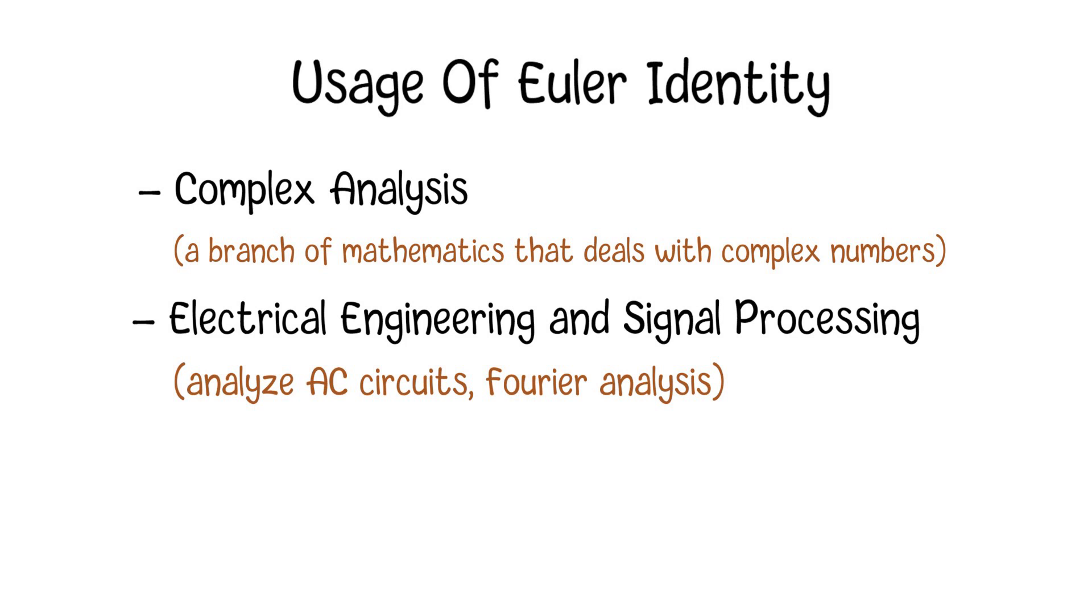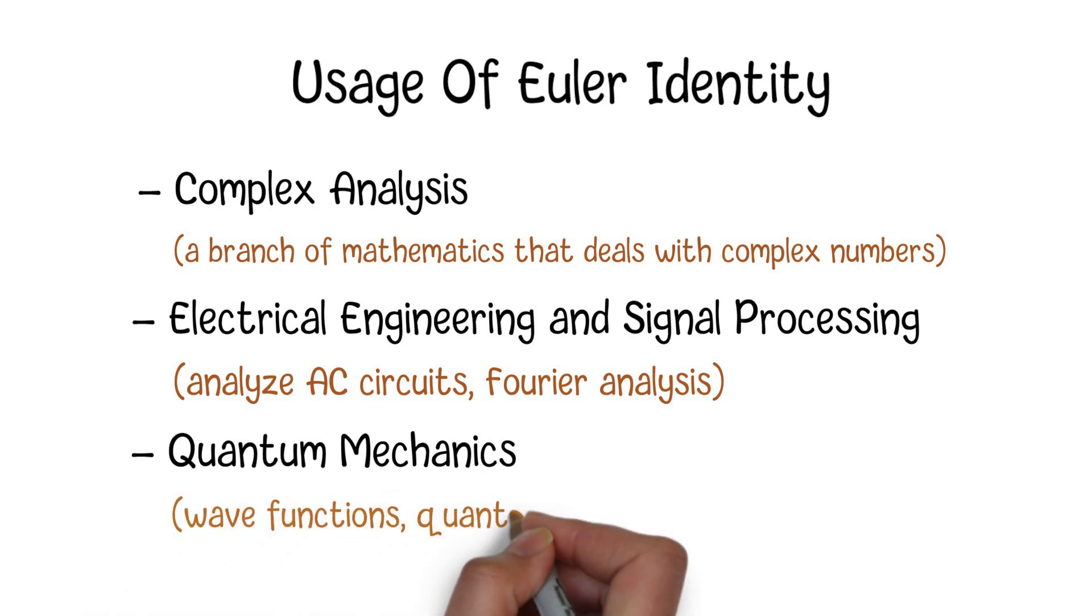Moreover, the Euler identity is utilized in quantum mechanics too, particularly in the context of wave functions, quantum operators, and the Schrodinger equation. It helps describe the behavior of quantum particles and their wave-like properties.